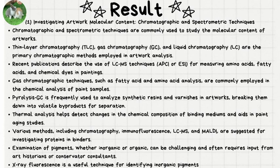For the results — firstly, unveiling artwork composition. Chromatography and spectrometric techniques play a vital role in the analysis of molecular content within artworks. TLC, GC, and LC are the main types of chromatography employed for investigating artworks. Recent publications highlight the utilization of LC-MS techniques using APCI or ESI to measure amino acids, fatty acids, and chemical dyes in paintings. Gas chromatography techniques such as fatty acid and amino acid analysis are widely applied for determining the chemical composition of paint samples.